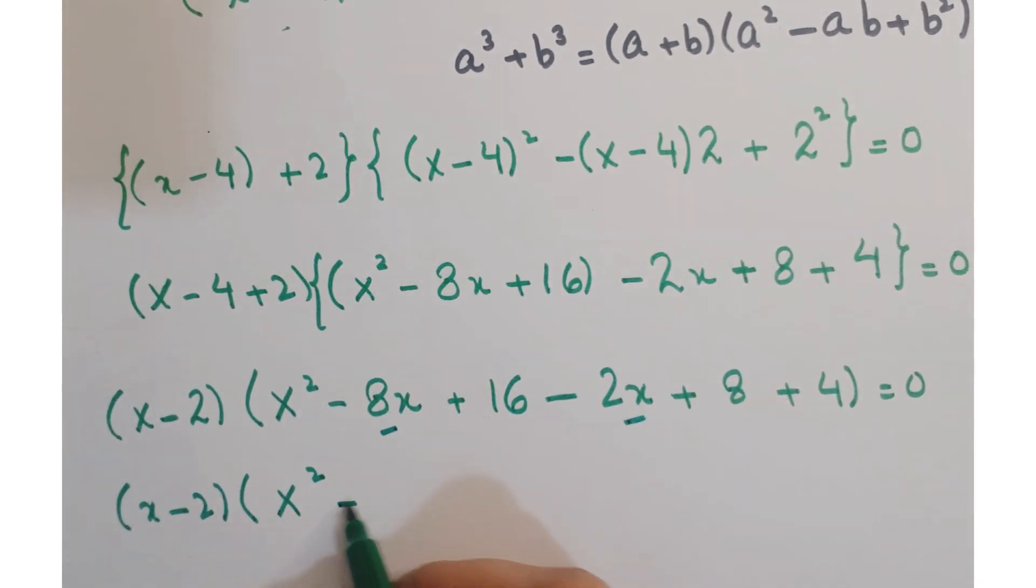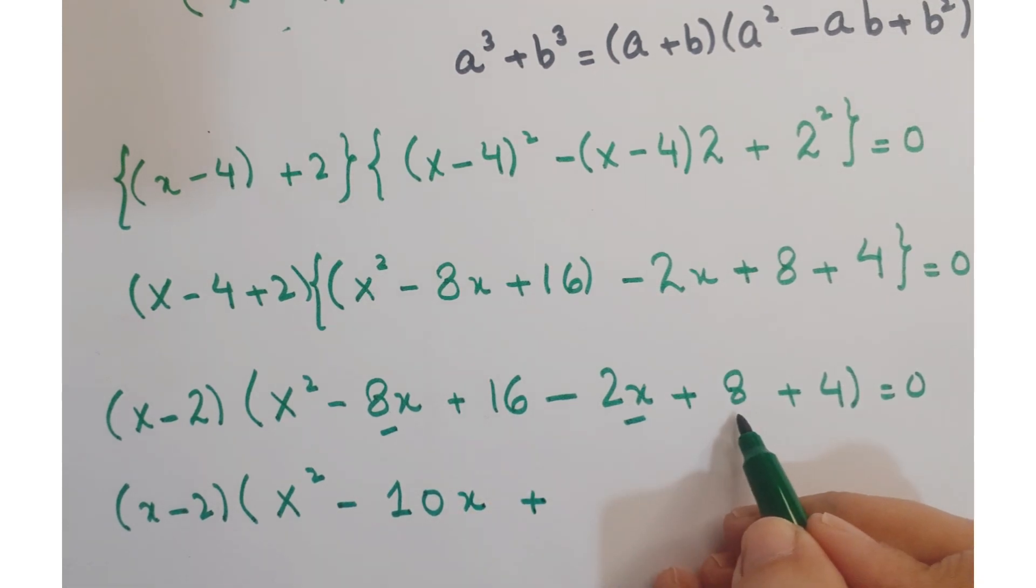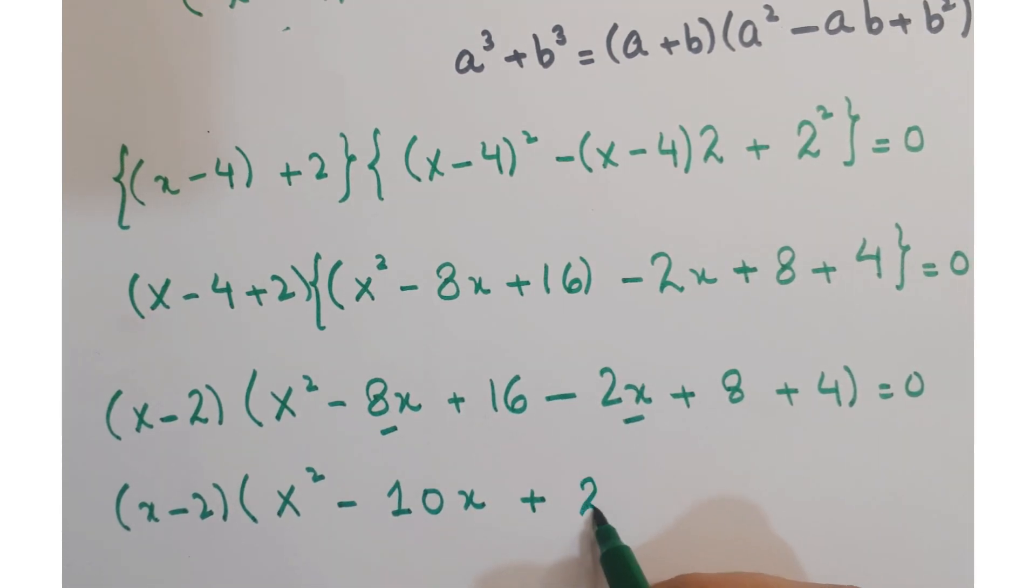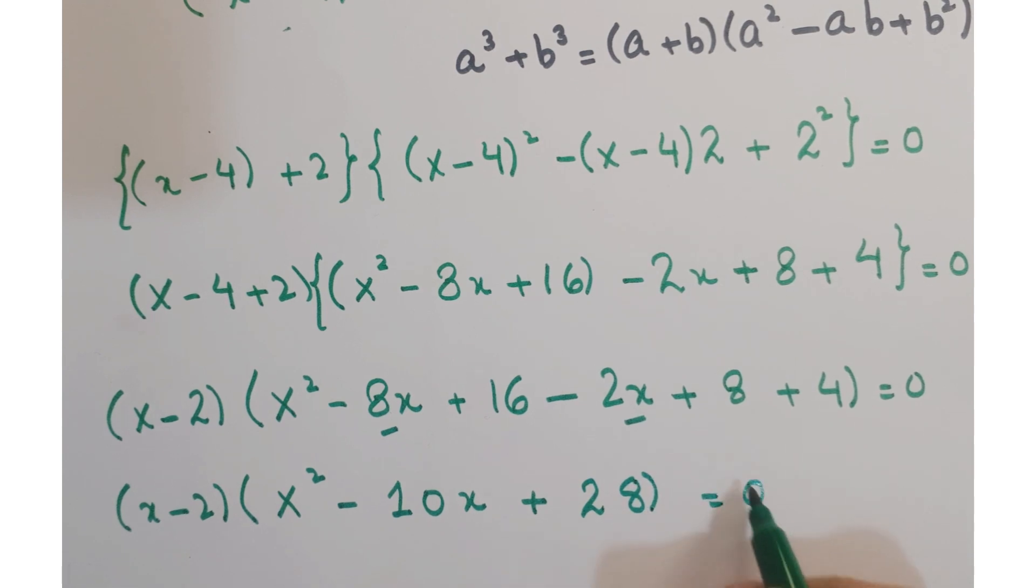Now there are two linear terms. It makes minus 10x plus this 16 plus 8 and this 4. So this makes 28 equals 0.